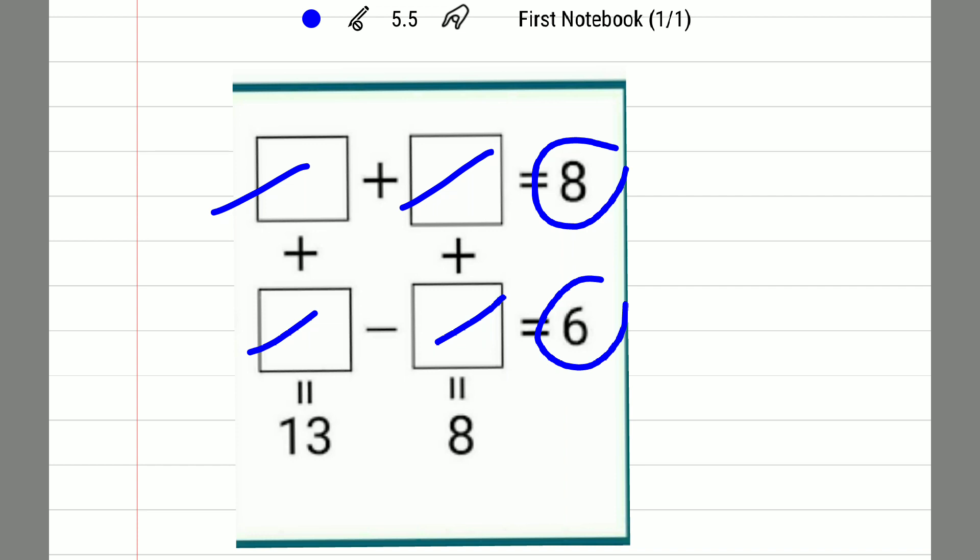One more thing: if I go column-wise, this block and this block value if I add them should equal 13. And if I go for the second column, this block value and this block value if I add them should equal 8. Let's see how to solve this.